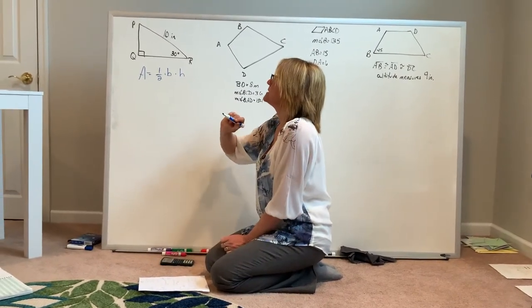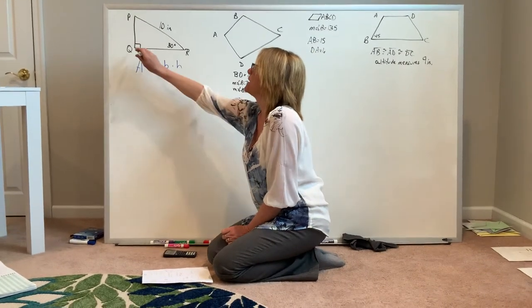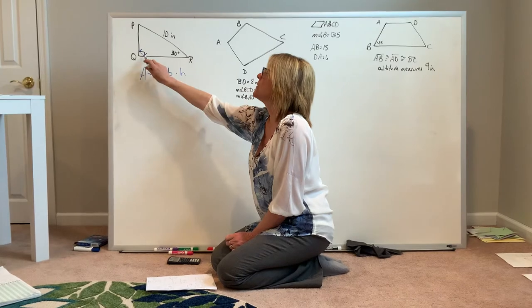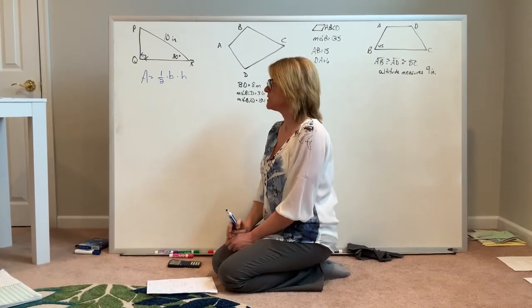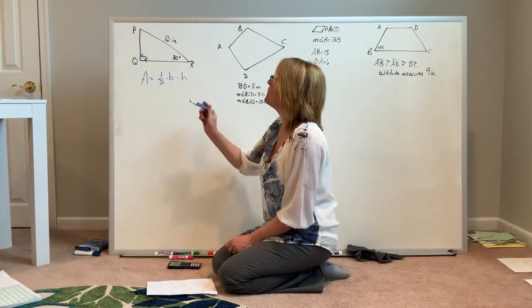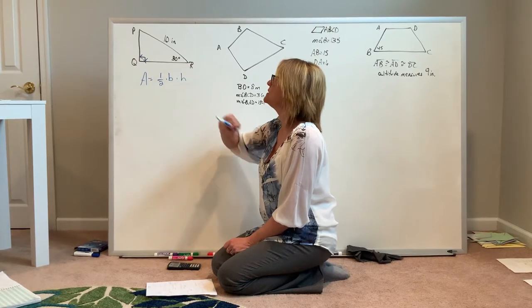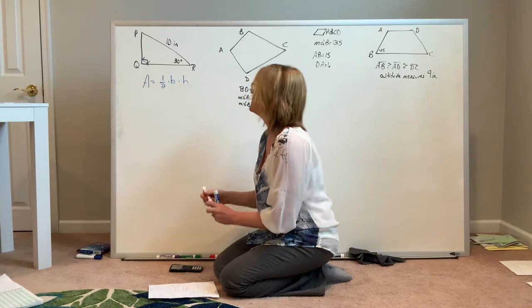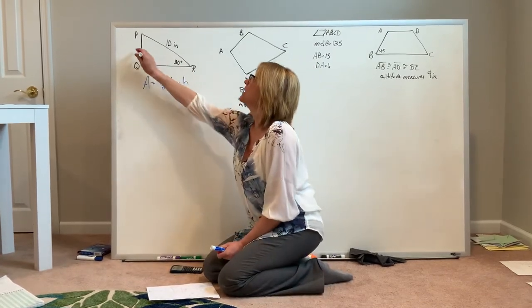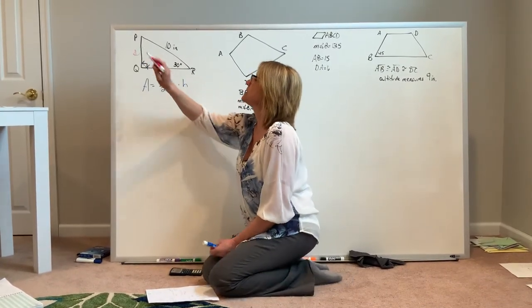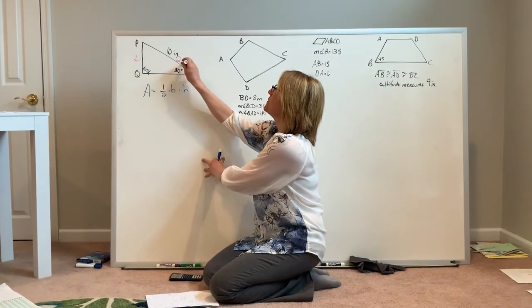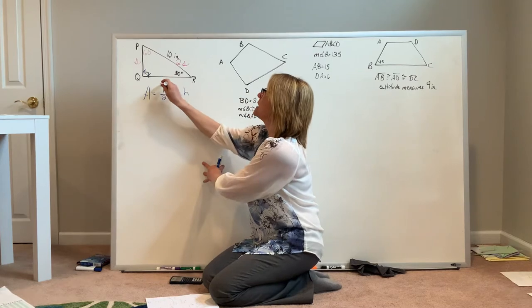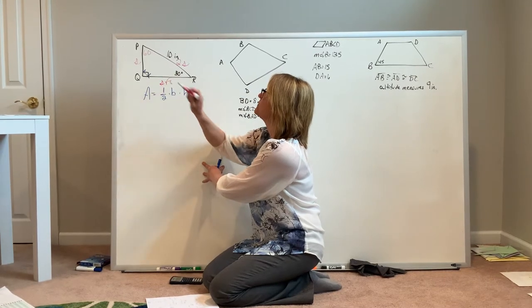In order to find the base and height, we always want to look for a right angle and I can see that a right angle exists here. I wasn't given either of them, but I do see that I have a 30-60 right triangle. In every 30-60 right triangle, across from my smallest angle is my smallest side, my hypotenuse is always twice as big, and across from the 60 degree angle is my side with the length of s times the square root of 3.